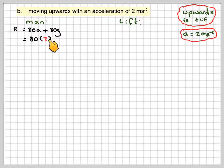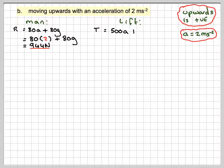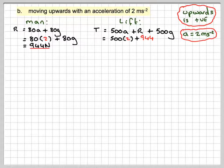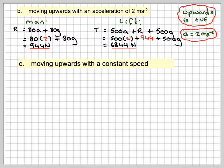Case 1: the lift accelerates upwards at 2 m/s². Since upwards is positive, a equals positive 2. The reaction on the man is R equals 80 times 2 plus 80g, giving 944 newtons. The tension is T equals 500 times 2 plus 944 plus 500g, which gives 6844 newtons.